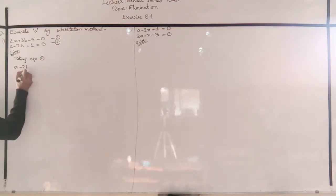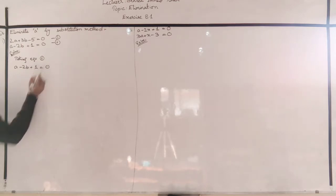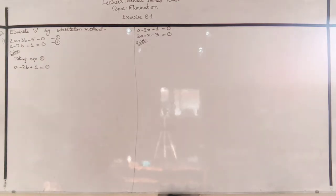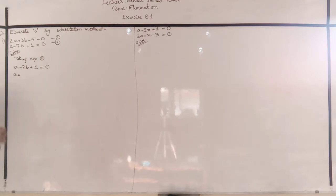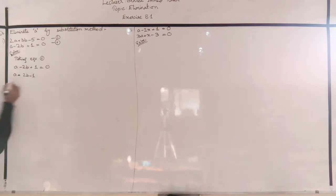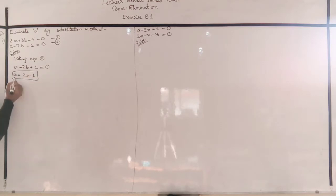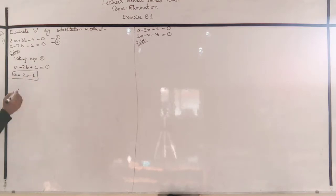Taking equation number 2: A minus 2B plus 1 equal to 0. We isolate A: 2B equal to 1, so A is equal to 2B minus 1.